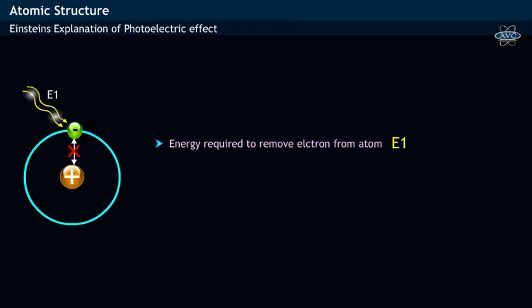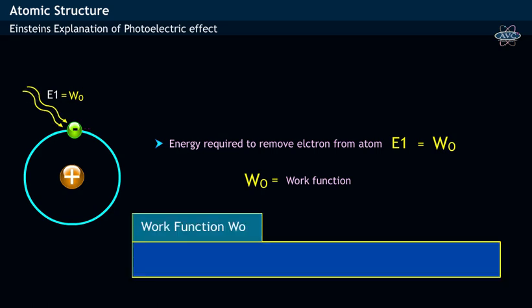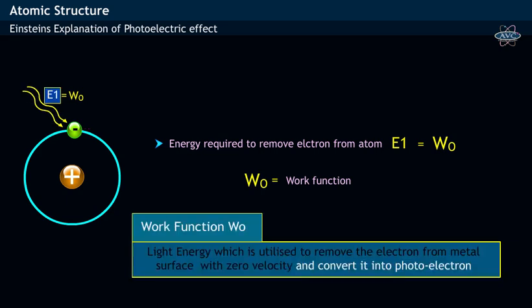Let the energy used for removing the electron of an atom be represented by W0, which is called as work function. It is defined as the energy which is used to remove the electron from the metal surface with zero velocity and convert it into photoelectron.